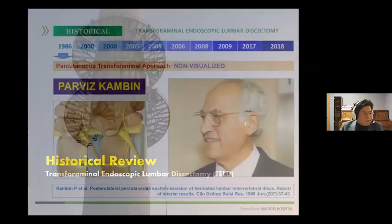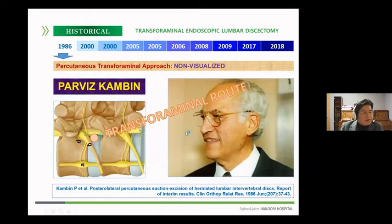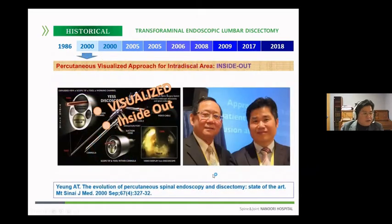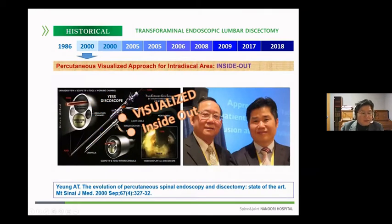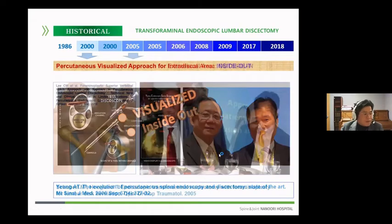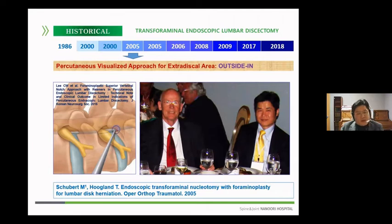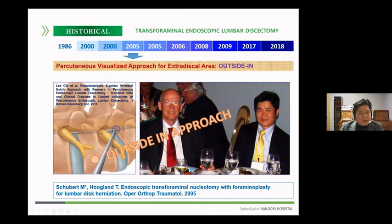Historically, transforaminal endoscopic spine surgery can be said to have originated in 1986 when Kambin's triangle was introduced. However, visualized endoscopic spine surgery capable of full endoscopic spine surgery began in 2000, when Anthony Yeung introduced the inside-out transforaminal endoscopic lumbar discectomy. When Thomas Hoogland introduced the outside-in transforaminal endoscopic lumbar discectomy in 2005, transforaminal endoscopic spine surgery made a lot of progression.